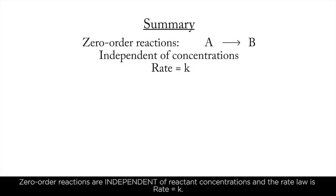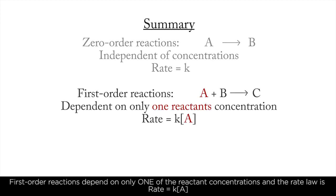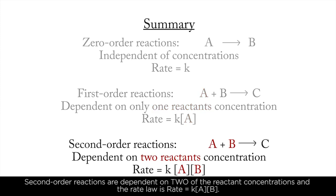Zero-order reactions are independent of reactant concentrations and the rate law is rate equals K. First-order reactions depend on only one of the reactant concentrations and the rate law is rate equals K times concentration of A. Second-order reactions are dependent on two of the reactant concentrations and the rate law is rate equals K times concentration of A times concentration of B.